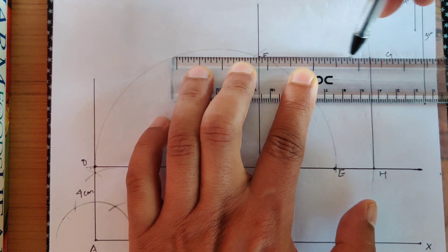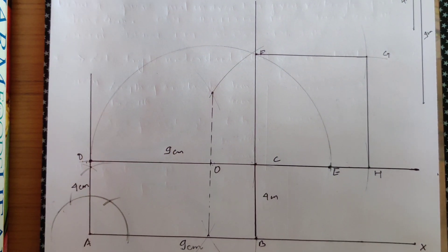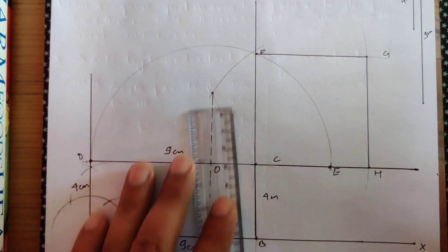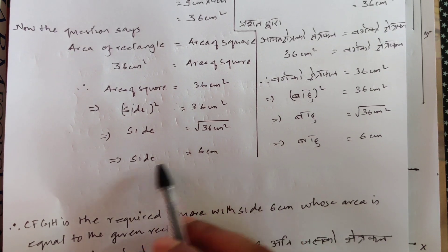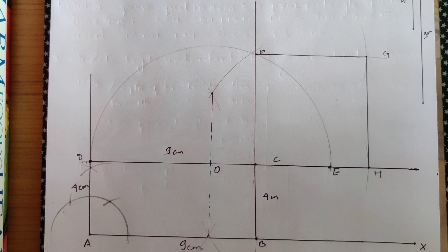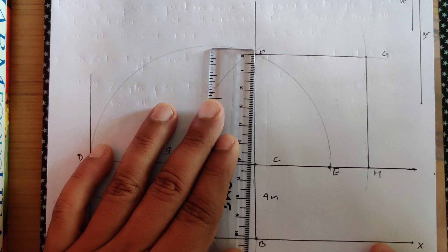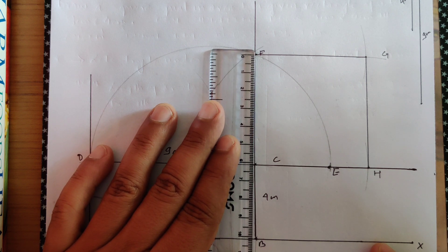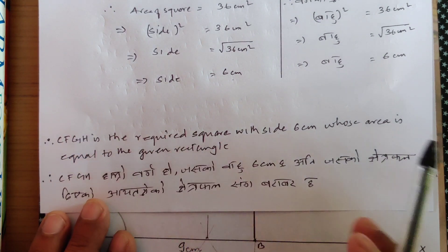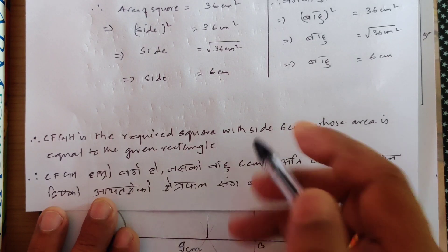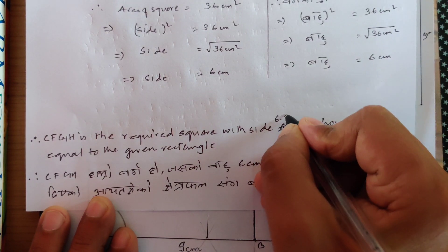Thus, CFGH is the required square. Let's check the side of the square. Our expected answer, as I showed at the beginning, was six centimeters. If you get the side as six centimeter, you are correct. Let's measure — keeping it at zero — I'm getting approximately 6.1 centimeters. That's alright.